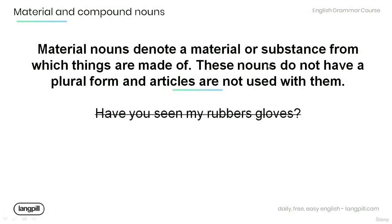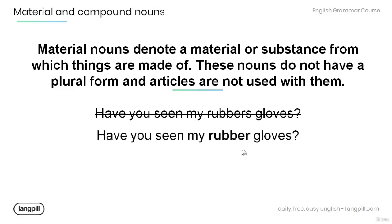Now let's review and practice a bit. Remember, material nouns denote a material or substance from which things are made of. These nouns do not have a plural form and articles are not used with them. Provide the correct form of the following sentence: 'Have you seen my rubber gloves?'